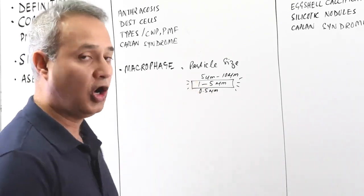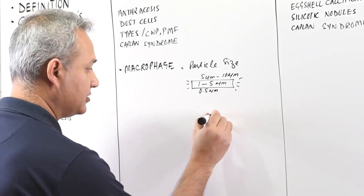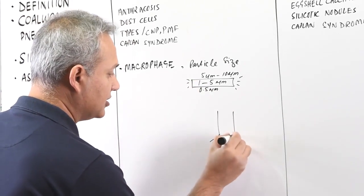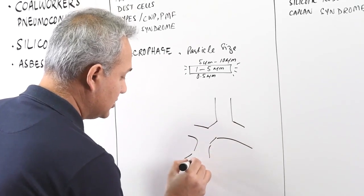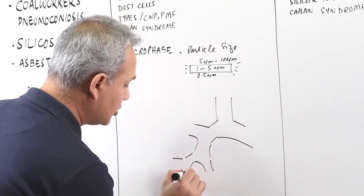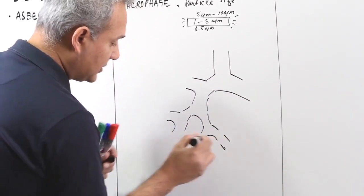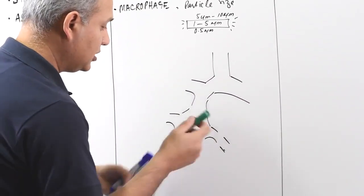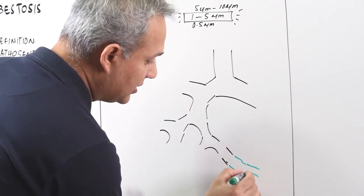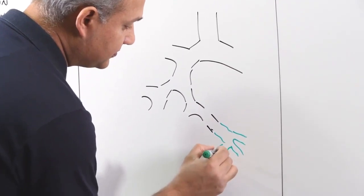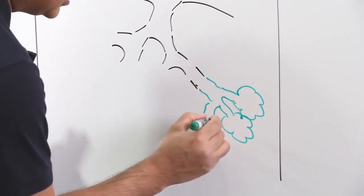These particles get lodged in the airways. So if I make an airway over here, let's say this is the trachea, then we've got smaller and smaller airways. And finally, we reach smaller bronchioles, then respiratory zones and the alveolar sacs, alveolar ducts and alveoli.